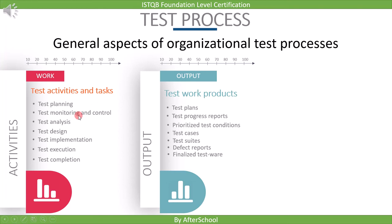Let's see some of the work products we get from these test activities. In the test planning stage, we get test plans as output. From the test monitoring and control stage, we get a test progress report as output. From the test analysis stage, we get a list of prioritized test conditions. From the test design stage, we get test cases as output.